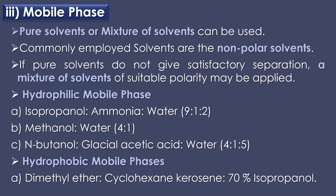The third component is the mobile phase. Pure solvents, buffer solutions, or mixes of solvents can be used. The commonly employed solvents are nonpolar solvents, but the choice depends on the nature of the substances to be separated. If pure solvents do not give satisfactory separation, a mix of solvents of suitable polarity may be applied. Hydrophilic mobile phases include isopropanol, ammonia, and water (9:1:2); methanol and water (4:1); and N-butanol, glacial acetic acid, and water (4:1:5). The hydrophobic mobile phase used is dimethyl ether, cyclohexane, and 70% isopropanol in combination.